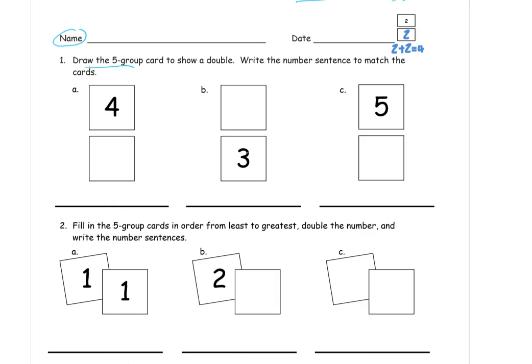Number 1, draw the 5 group card to show a double. And then write the number sentence to match the cards. So here's an example of what we're doing. We're making doubles. Doubles are when you just add the same number to itself. You double it.